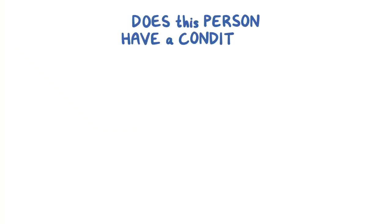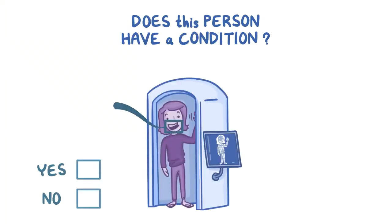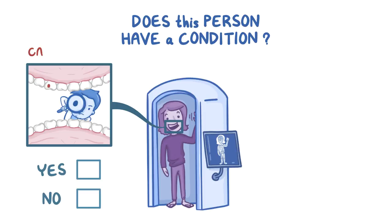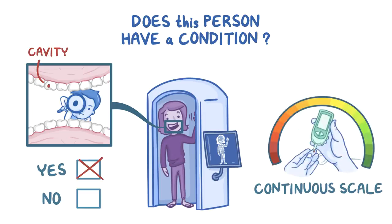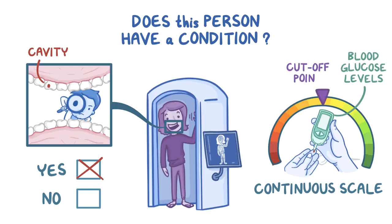Sometimes deciding if a person has a condition is a matter of yes or no, like having a cavity or not. But other conditions are on a continuous scale, like blood glucose level. For these conditions, there has to be a cutoff point that makes the test result either positive or negative.